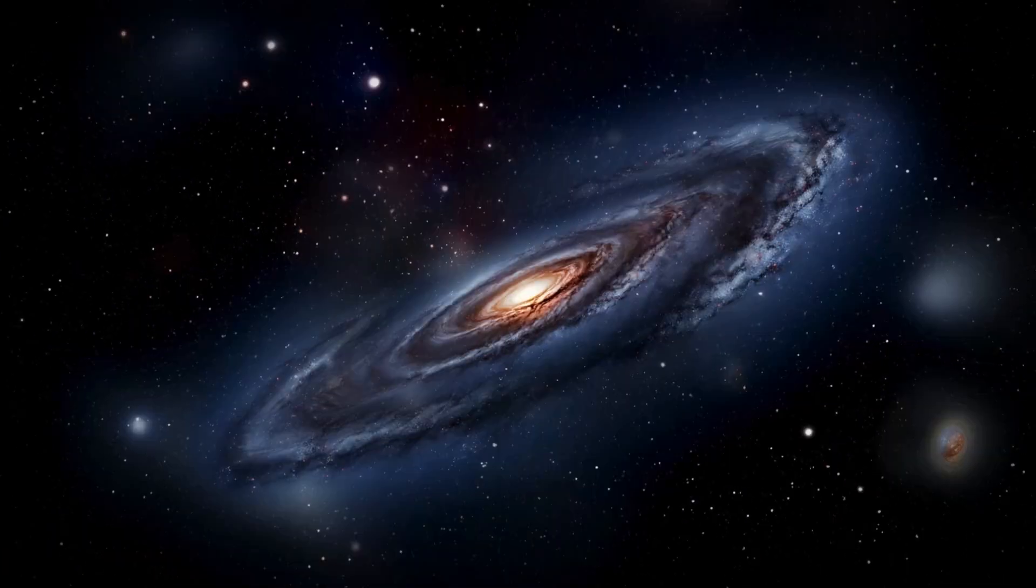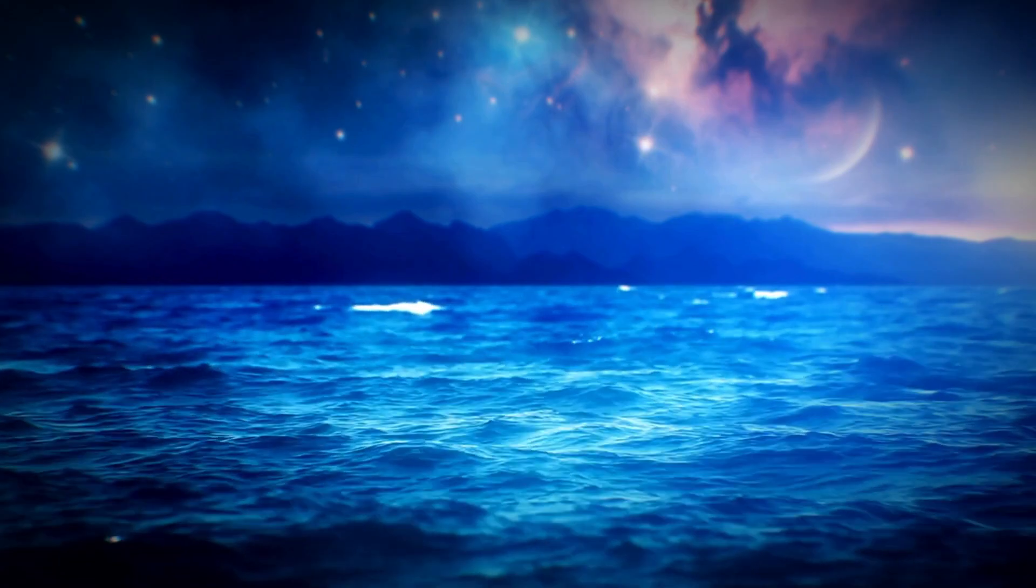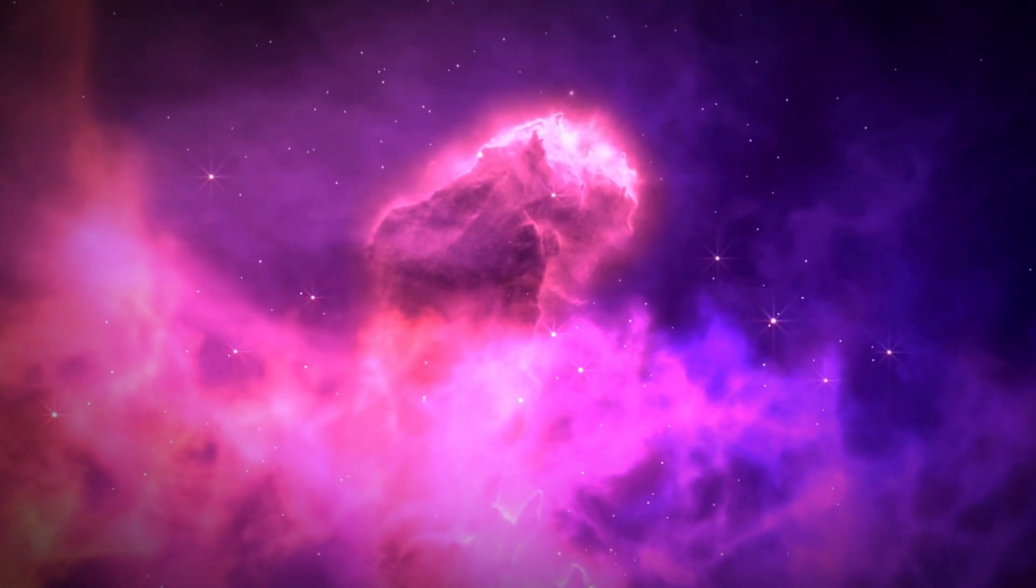Supernova explosions are incredibly large stars' last moments. Red giants start burning carbon and oxygen into neon and magnesium, then burn those into silicon. After using up all the helium in their cores, the centers of the stars eventually become iron-rich.